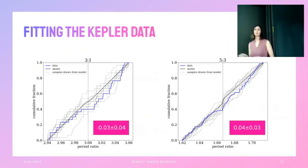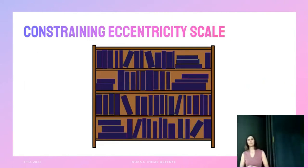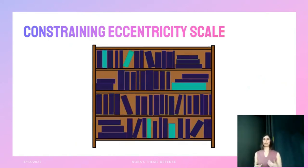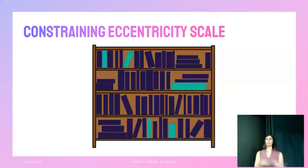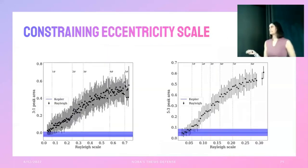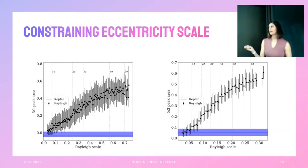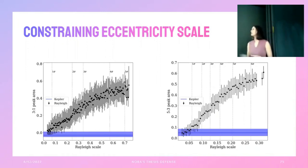For the Kepler data, the peaks are basically not significant. If eccentricity is what produces a nice peak and we don't see nice peaks in Kepler data, that means these planets are probably not very eccentric. To quantify this, we sample from our library of synthetic planet pairs based on eccentricity, fit the period ratio distribution, and do this for a wide range of eccentricity scales. Very high eccentricity scales are completely inconsistent with the Kepler data.